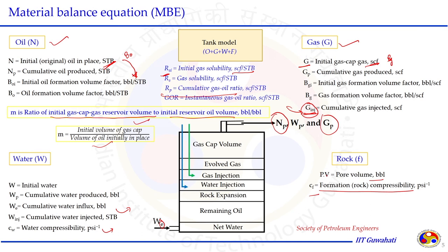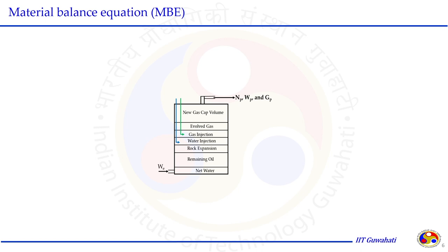Initial water may also be present in the reservoir. In general, we consider the change in water volume — how much water enters by influx and how much is cumulatively produced. The initial water is needed when discussing the pore volume occupied by initial water, to determine the initial water saturation SWI.